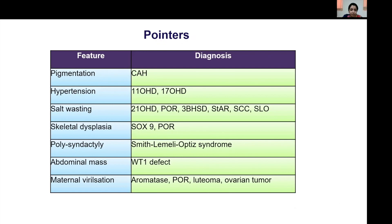Certain clinical pointers help identify the etiology: pigmentation points towards congenital adrenal hyperplasia; hypertension gives a clue about 11-hydroxylase or 17-hydroxylase deficiency; various steroidogenesis defects are associated with salt-wasting; skeletal dysplasia may be seen with SOX9 mutation or POR deficiency; SLO syndrome is associated with polysyndactyly; an abdominal mass in XY DSD should prompt exclusion of WT1 defect; and maternal virilization is seen in aromatase or POR deficiency, luteoma, or ovarian tumor. This reinforces the importance of determining gonads and Mullerian structures to classify and investigate DSD.